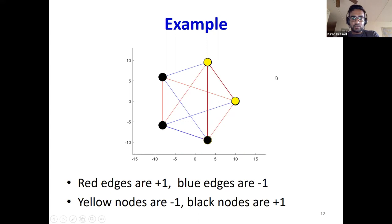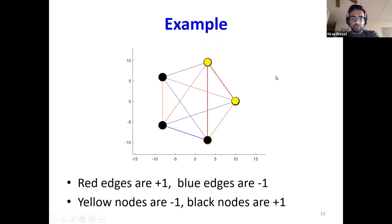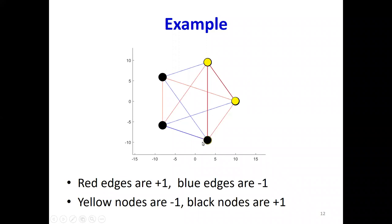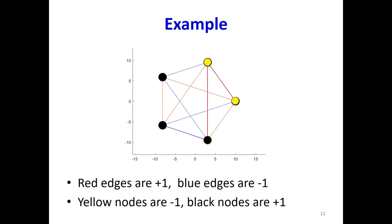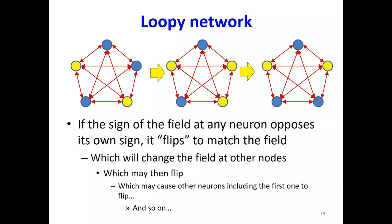You don't even have to think about it in terms of order — you can think of all of them as operating simultaneously. Every neuron is going to get some field at itself at the current instant. It's going to try to align itself with the field. But when that happens, it's going to change the field at the other neurons, which may flip. And so the whole operation can keep on continuing. If the sign of the field at any neuron opposes its own sign, it flips to match the field, which will change the field at other neurons, which may then flip, which may cause those other neurons including the first one to flip, and so on.